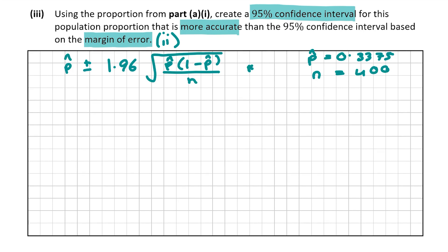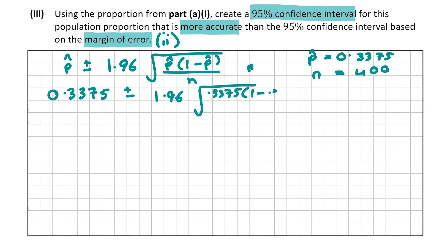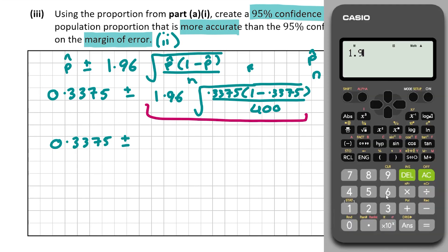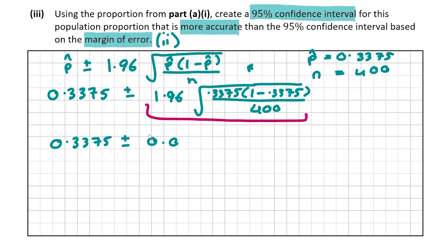This formula is not in the log tables, so it's something you should learn off by heart when studying statistics for the Leaving Cert. Filling it in, we have 0.3375 plus or minus 1.96 multiplied by the square root of (0.3375 × (1 − 0.3375) / 400). Calculating that bracket gives us 0.046339.